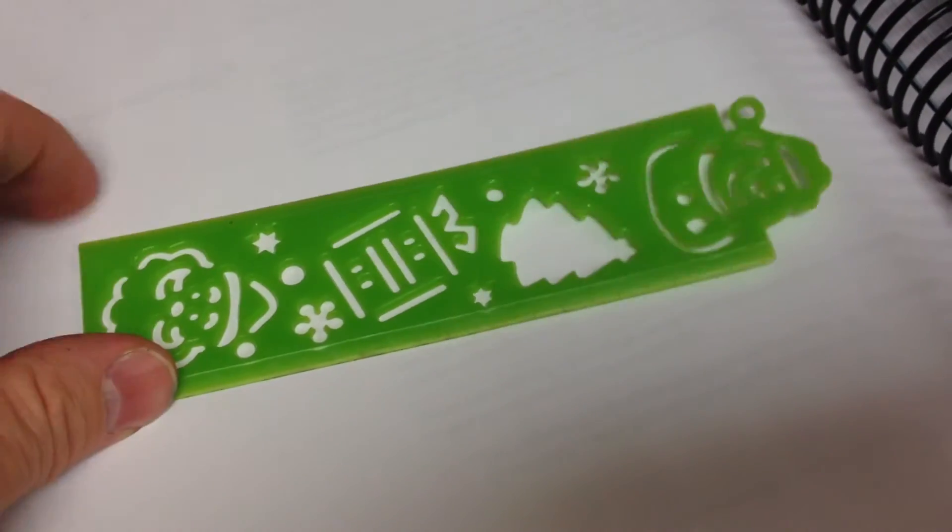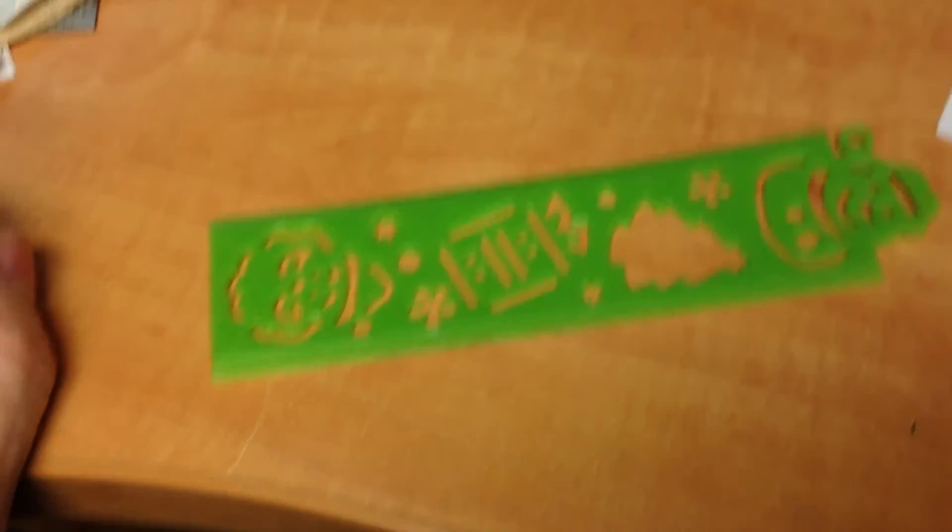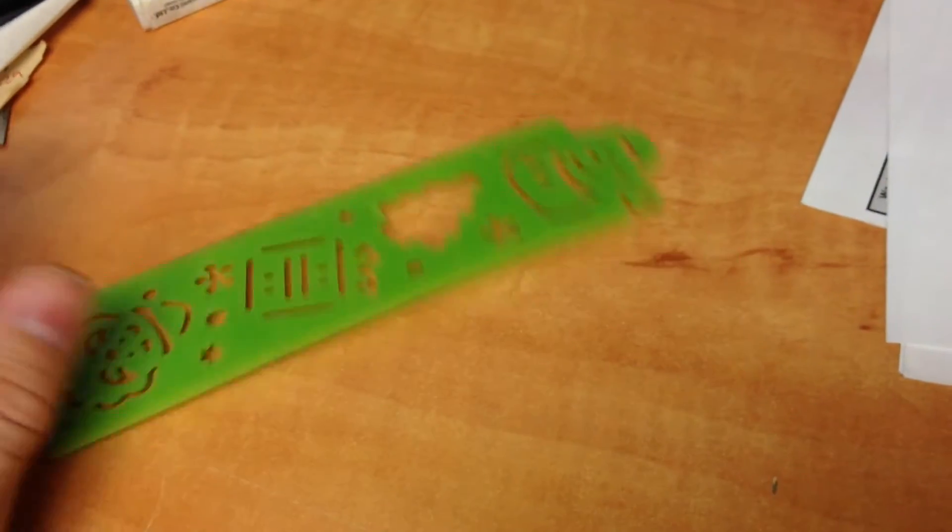Three things. It's supposed to be a ruler. First, it doesn't lie flat. It's curved.